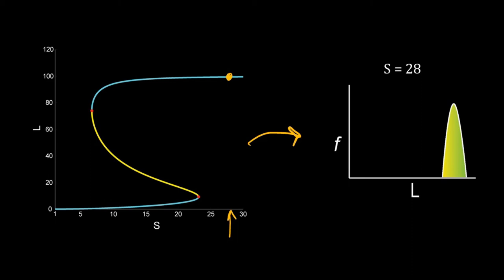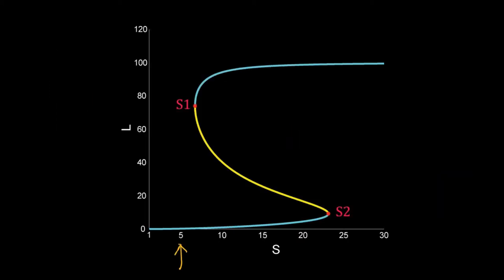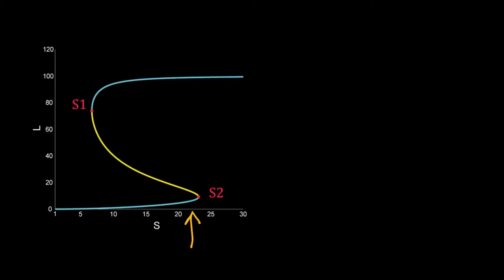Now what will happen in the bistable region? Suppose initially S is equal to 5, then we increase the dose of S to S equal to 22. This is close to the bifurcation point S2. The cells were earlier at the lower steady state. Following the deterministic behavior on a phase portrait, all cells should stay at the lower steady state even at S equal to 22. However, that will not happen. Some cells will move to the higher stable steady state due to the stochastic fluctuations.